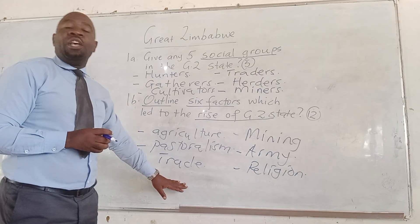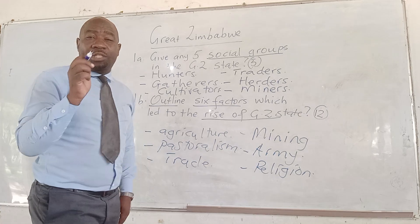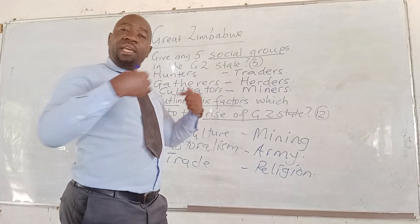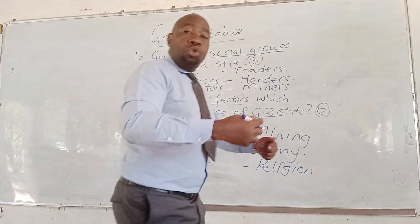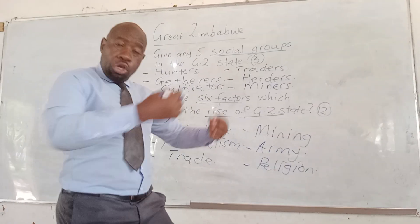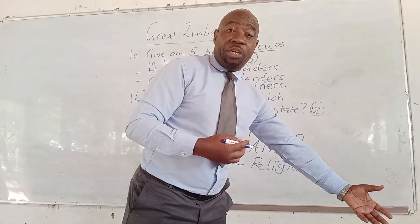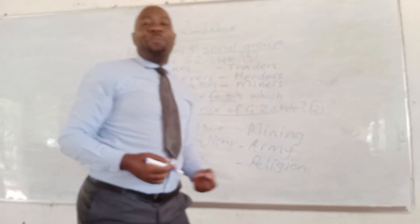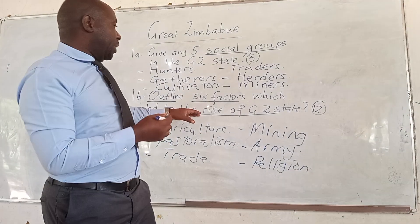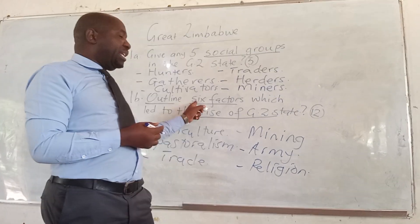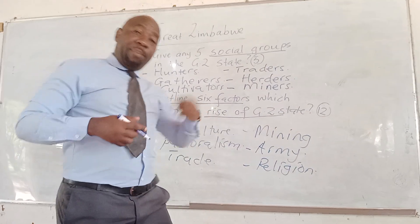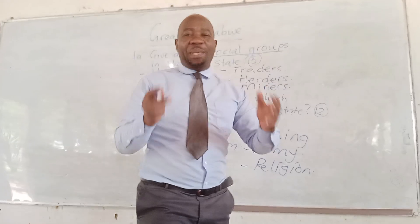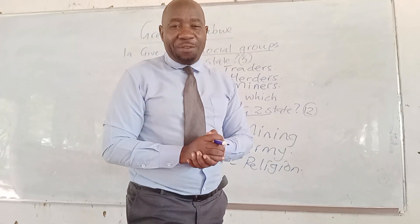So these are the factors that led to the rise of Great Zimbabwe. As you are writing this, you are supposed to outline — give a point, then explain it. Your point becomes your B1 mark. Your explanation becomes your B2 mark. You talk about a point, you explain it, and the explanation becomes your B2. So that you can get 12 out of 12, because here you only talk about six factors. A factor plus explanation is B1 and B2, so that you are going to get 12 out of 12.